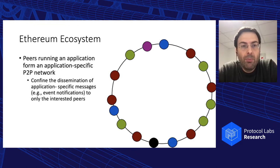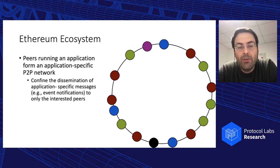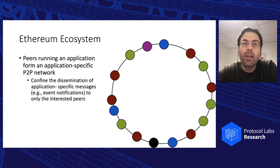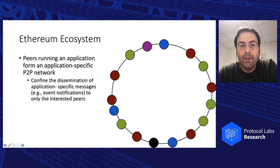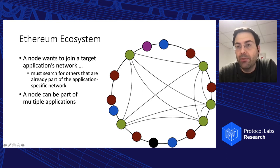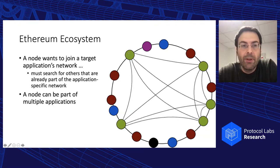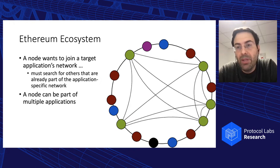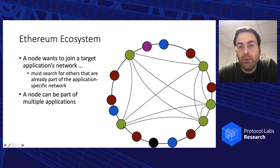It's highly desirable for peers running an application to form a dedicated application-specific peer-to-peer network among themselves, basically to confine the dissemination of application-specific messages like event notifications. We have a general large Ethereum network, which is unstructured, and then we have a discovery system where we build separate peer-to-peer networks between nodes running the same applications. The colors in this picture correspond to an application. A node can be part of multiple applications.